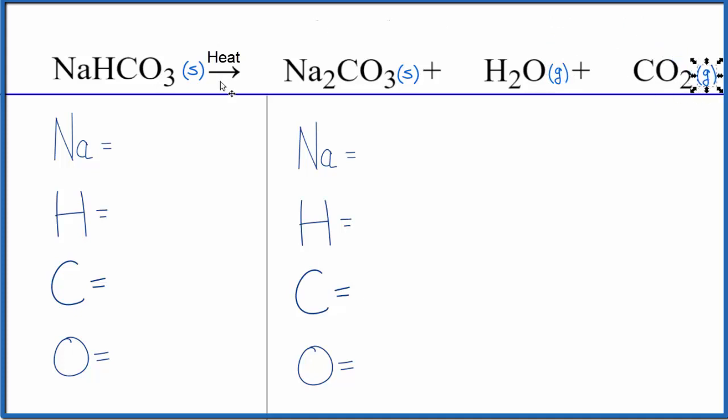These are the states for our baking soda breaking down. Now let's balance the equation. We'll first count the atoms up carefully. We have one sodium, one hydrogen, one carbon, and three oxygen atoms. On the product side, we have two sodium, two hydrogen atoms,